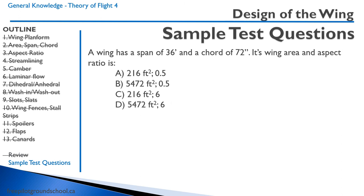Practice question: a wing has a span of 36 feet and a chord of 72 inches. What is its wing area and aspect ratio? First, convert to the same units: 72 inches is 6 feet. So 36 times 6 is 216 square feet for the wing area. The aspect ratio is the span divided by the chord: 36 divided by 6 equals 6. The correct answer is C.